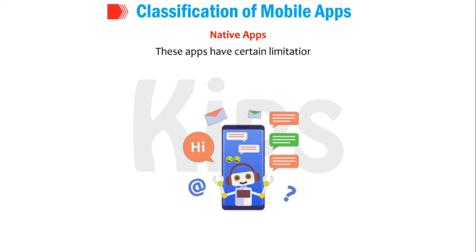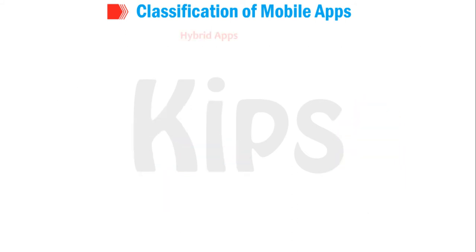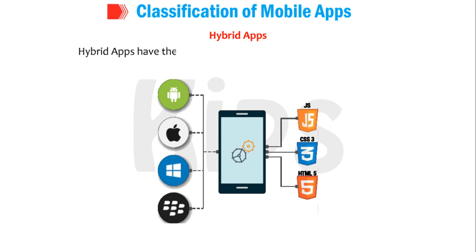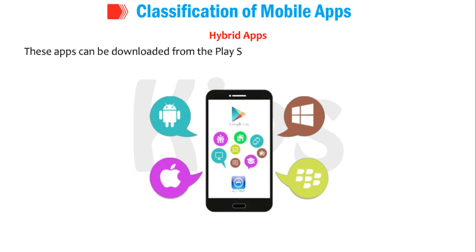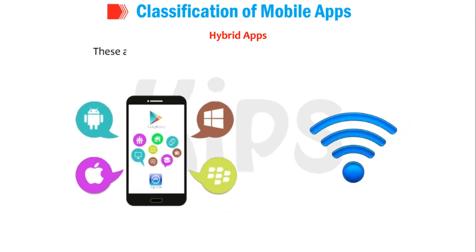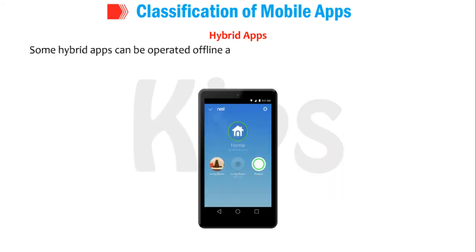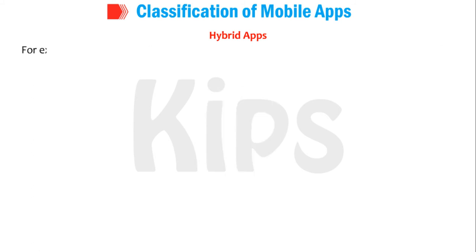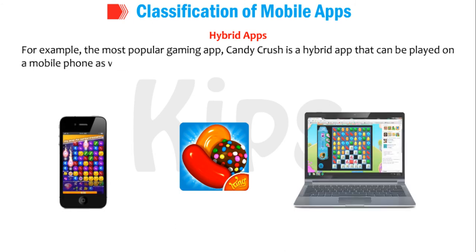Native apps have certain limitations — they are designed for a particular platform and are expensive to develop and maintain. Hybrid apps have the features of both web apps and native apps. These apps can be downloaded from the Play Store or App Store and installed on the device. Hybrid apps require the device to be connected to the internet, and can be stored partly on the local device and partly on the remote server. Some hybrid apps can be operated offline using cached pages; however, they have limited functionality offline. For example, the popular gaming app Candy Crush is a hybrid app that can be played on a mobile phone as well as on the web.